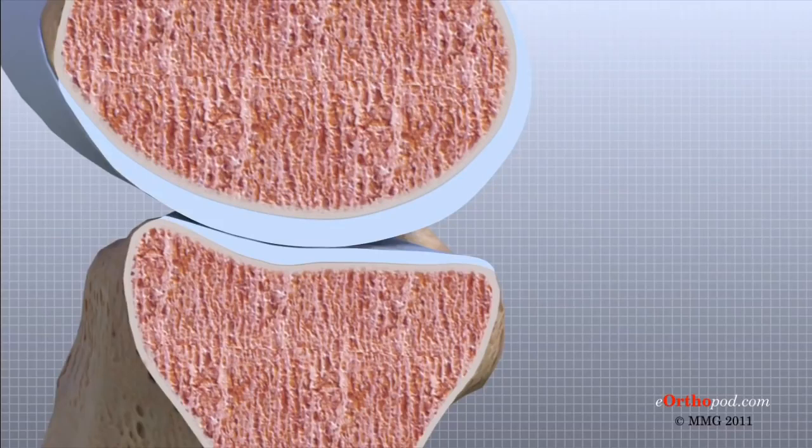In the knee, articular cartilage covers the ends of the femur, the top of the tibia, and the back of the patella.